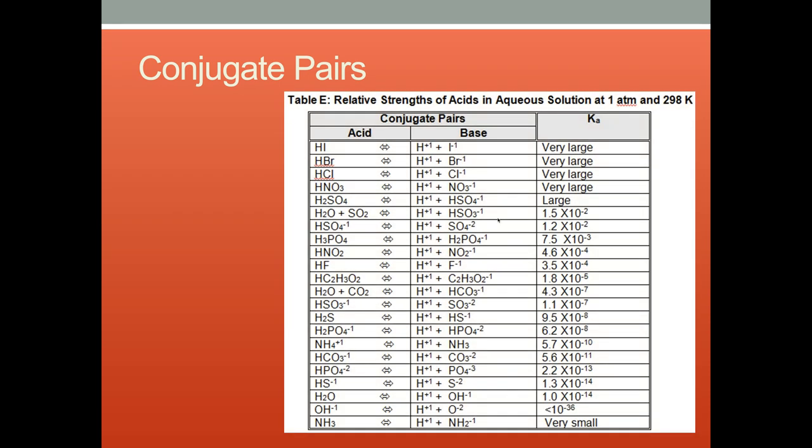When an acid loses a hydrogen, it forms a conjugate base. And when a base gains a hydrogen, it forms a conjugate acid. And the degree to which either the forward change happens or the reverse change is favored will give you an idea of how strong the acid or base is based on this Ka value here.